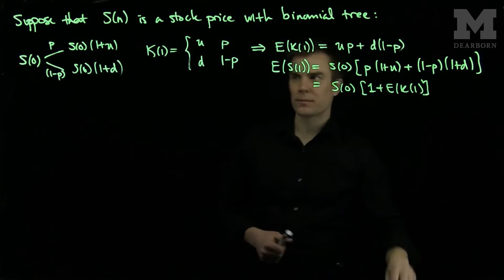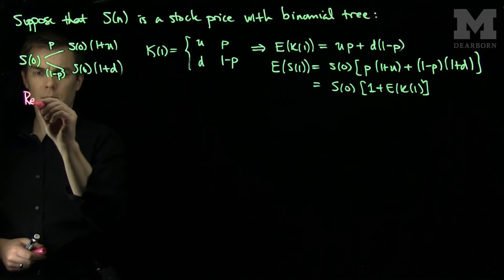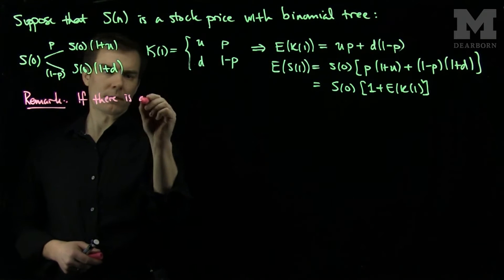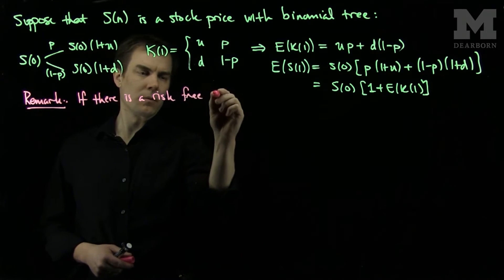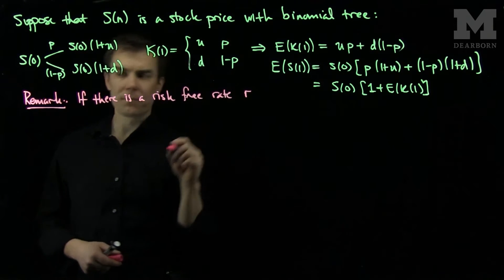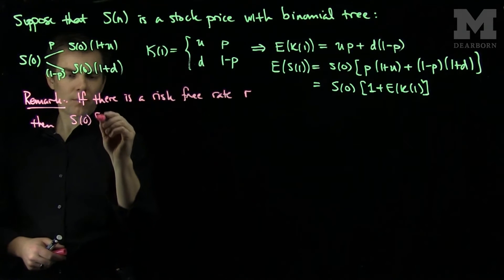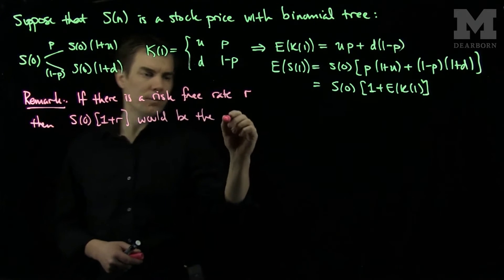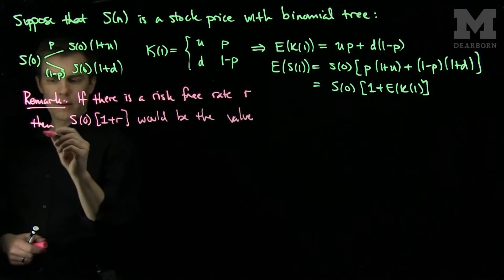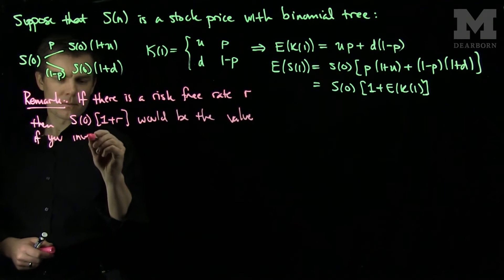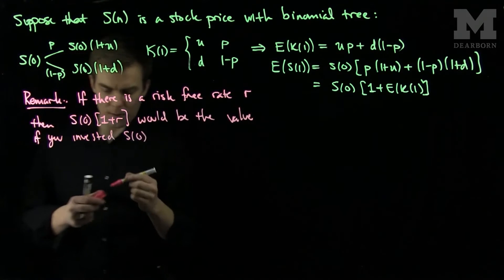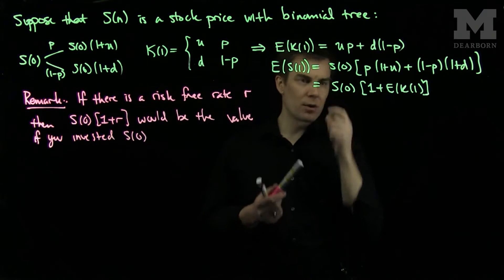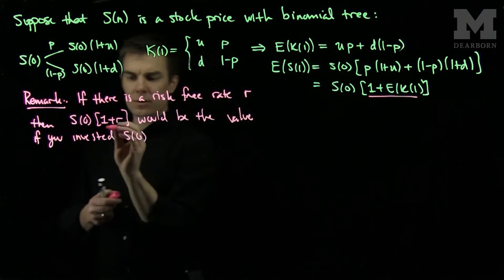And now what we can note is that if there is a risk-free rate of R, then S_0(1+R) would be the accumulated value if you invested S_0. So what we can do is compare the 1+R to the 1+E(K_1). So if we equate these two values,